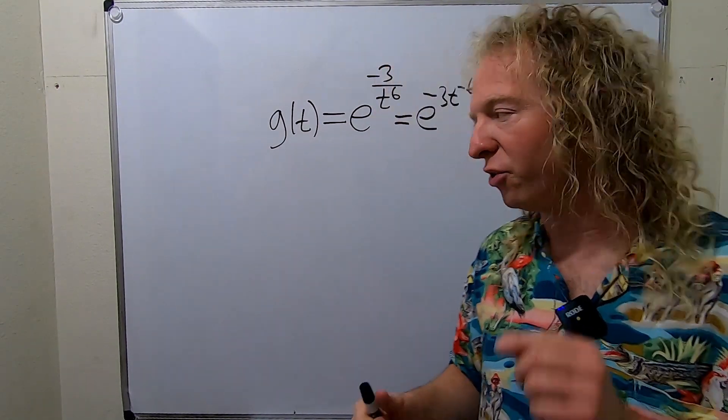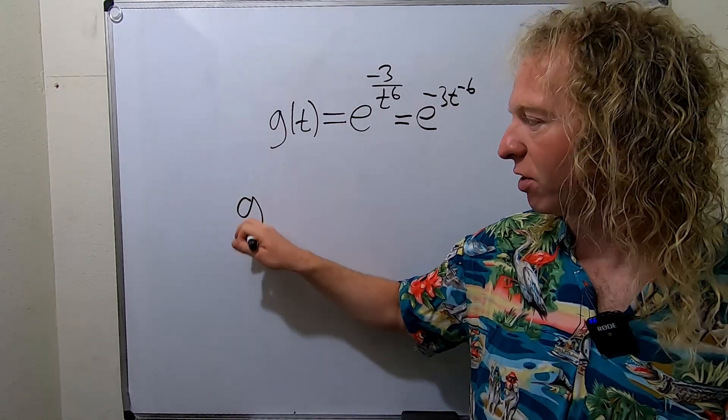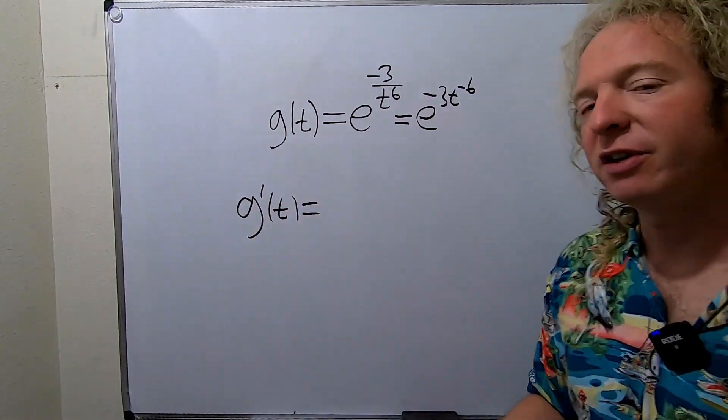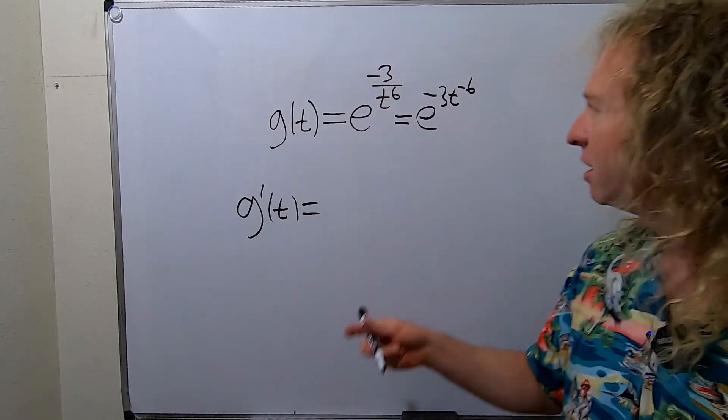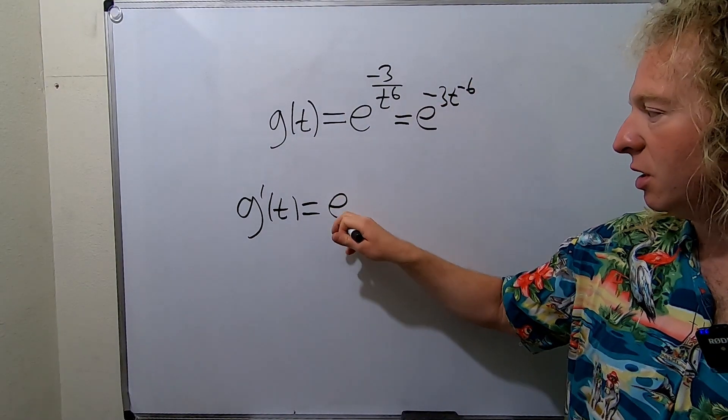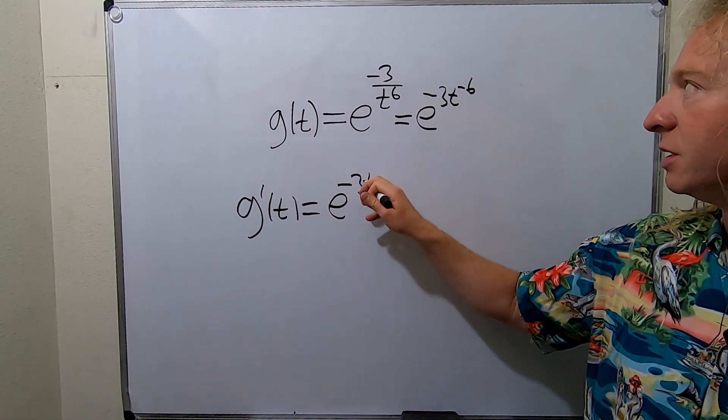So g prime of t: the derivative of e to the x is e to the x, so here it's e to this, so e to the negative 3t to the negative 6, times the derivative of the inside function.